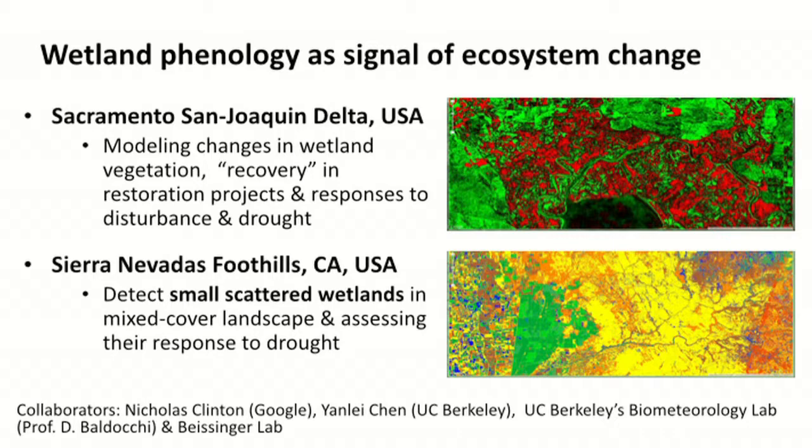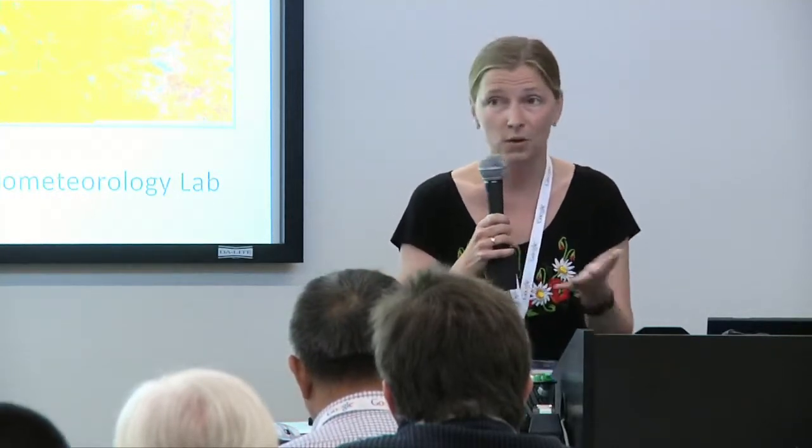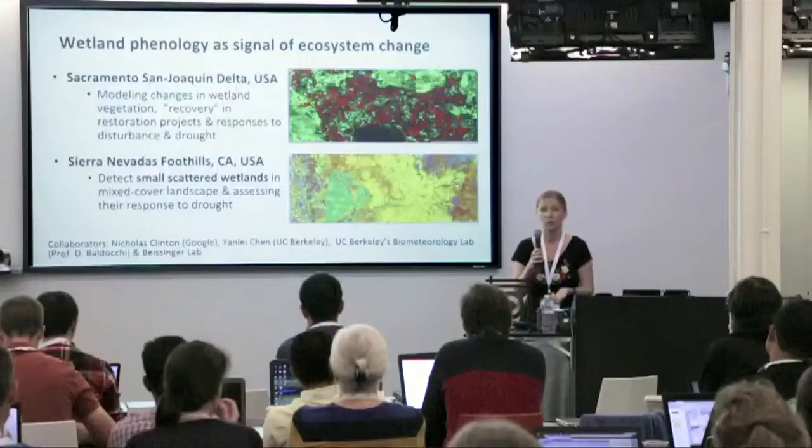Wetlands are very difficult to map with remote sensing data, even with high-resolution imagery that's not available everywhere, and this has been a big shortcoming for global wetland inventories, biodiversity analysis, and quantification of greenhouse gas budgets from wetlands in coastal zones. I'm trying to use phenology and seasonal information from temporal archives such as Landsat and MODIS to better detect wetlands and assess their changes in response to land use change, disturbance, and particularly drought. The sites I'm focusing on are in California: the Sacramento–San Joaquin Delta, a dynamic region critical to California's water supply, and small wetlands scattered in a mixed-cover landscape in the Sierra Nevada foothills.